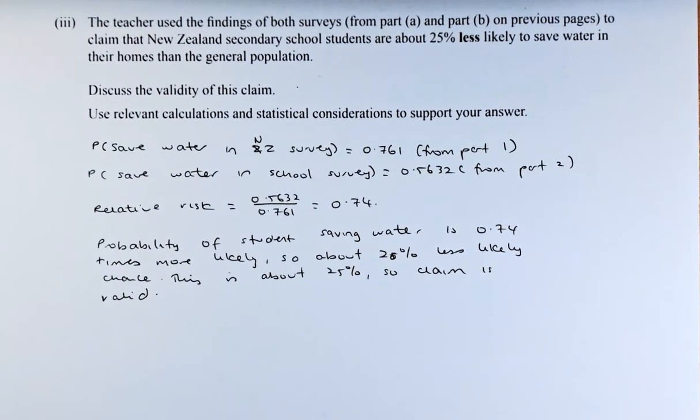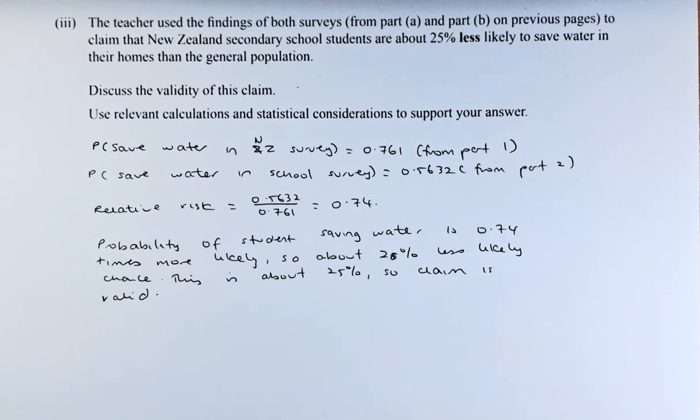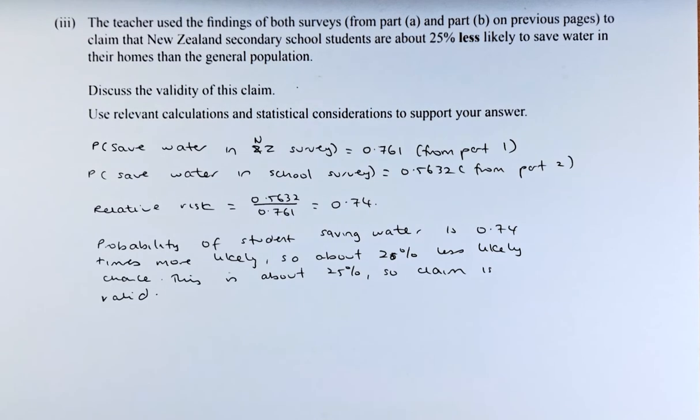The teacher used the findings of both surveys from part A and part B on the previous pages. You need to refer back to the video. Part A was a survey on New Zealanders, part B was a survey on the school. To claim that New Zealand secondary school students are about 25% less likely to save water in their home than the general population. Discuss the validity of this claim.